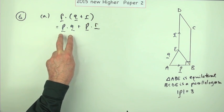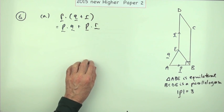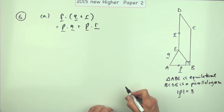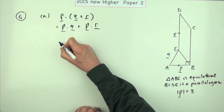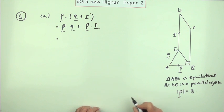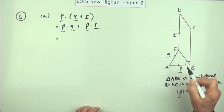The meaning of the scalar product is the product of the lengths, so don't just write pq plus pr. It's the product of the lengths that go in the same direction as one or other of them. The first mark was for multiplying out the bracket to get the sum of those two scalar products.